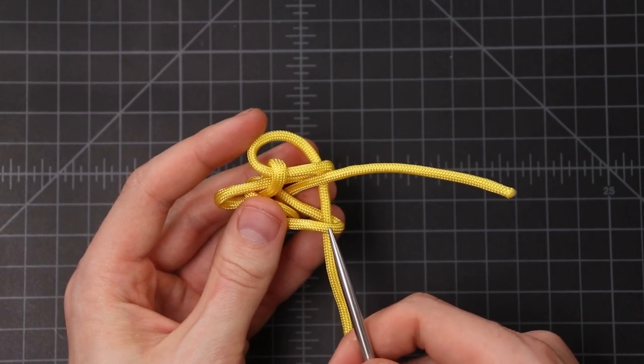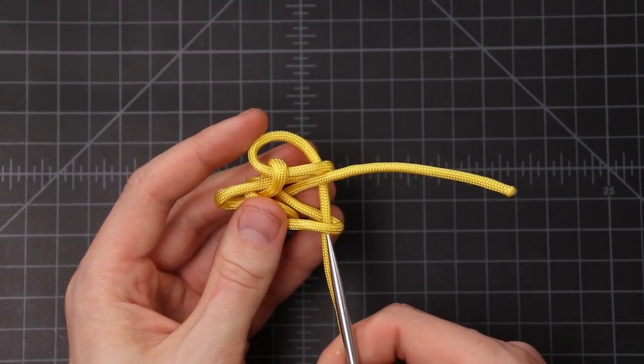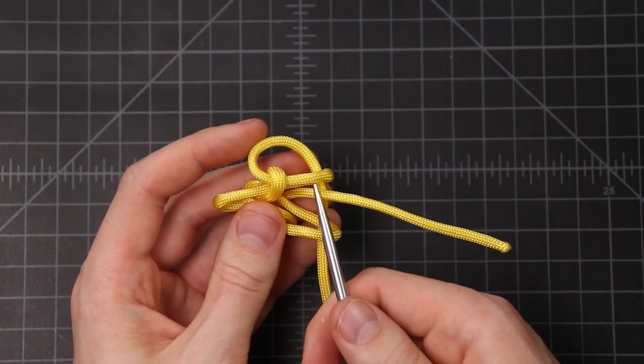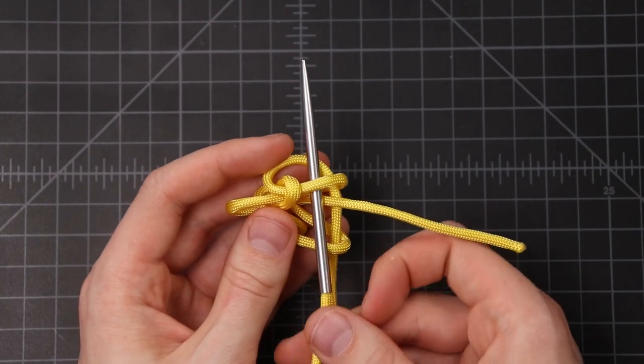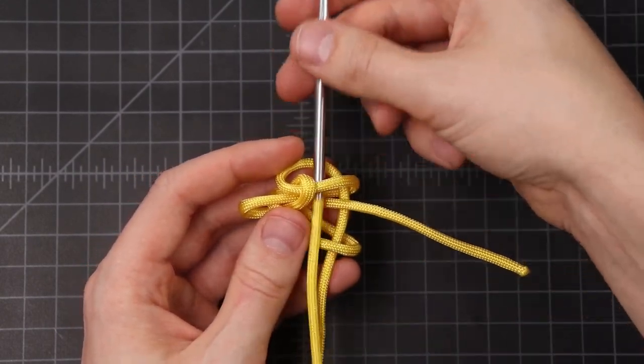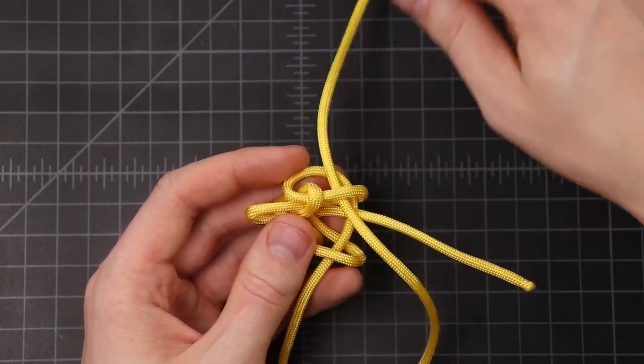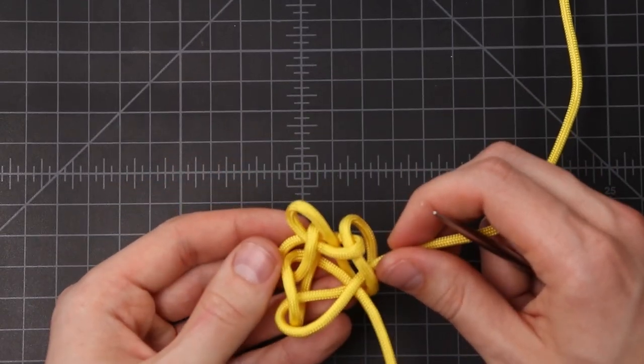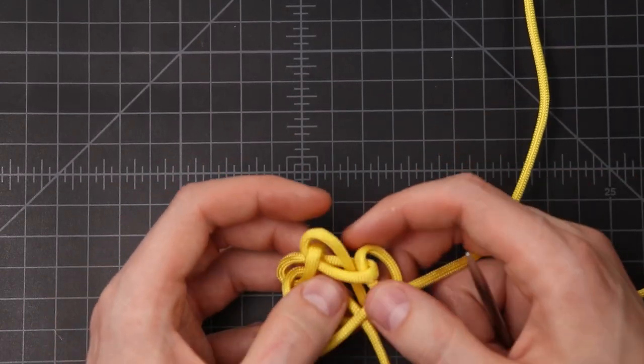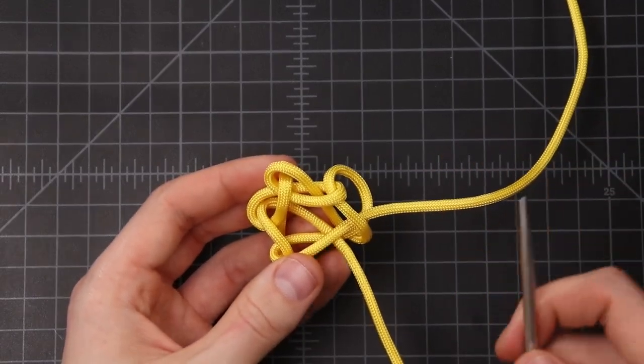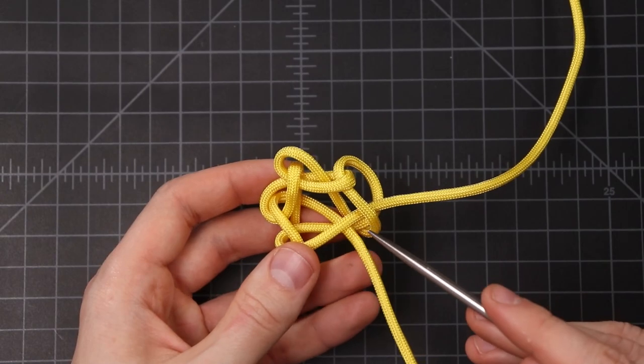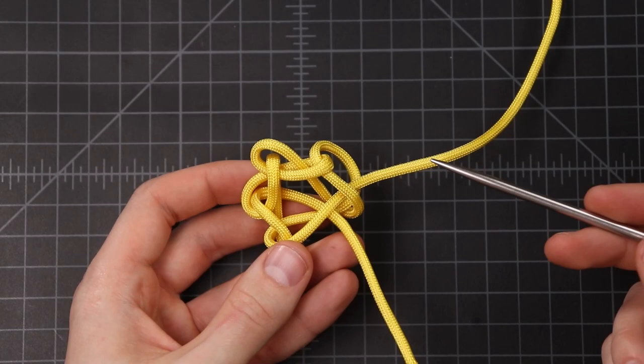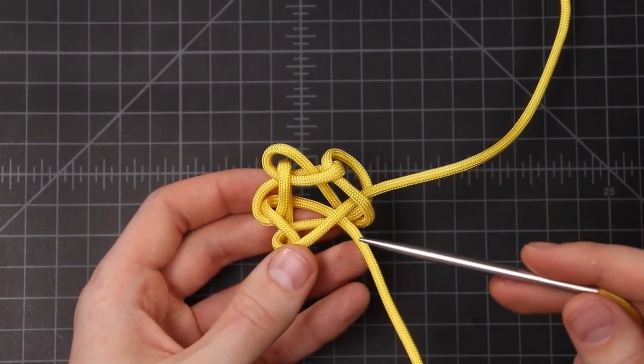So we're going to come back to the other side here, going over this first loop, over our standing end, and underneath that last loop. So now the first pass of our knot is complete, and now we're going to be doubling it up. So this is a bit tricky. It's not quite like a Turk's head, where we want to follow the standing end the whole time. We're going to be following it most of the way, and then along the way we'll be crossing over it about five times.